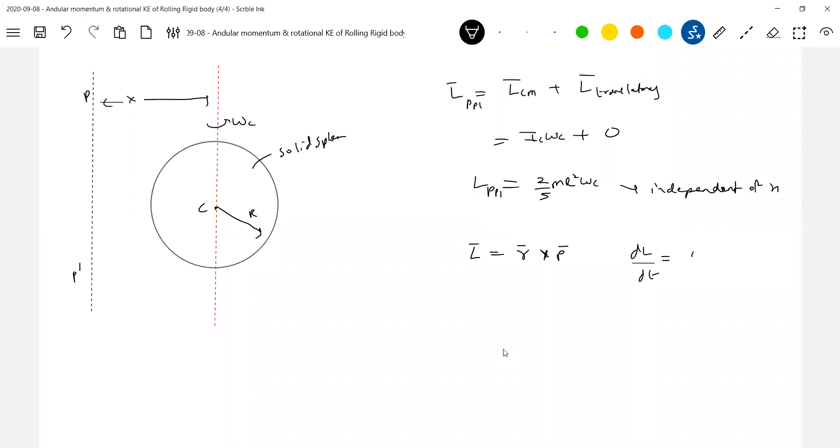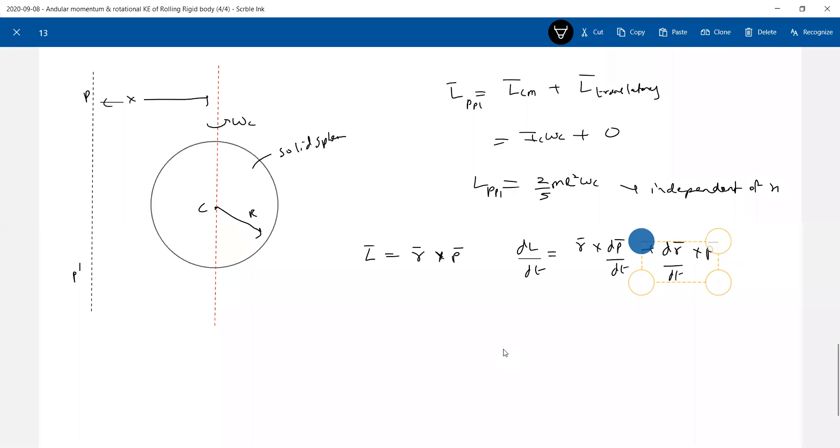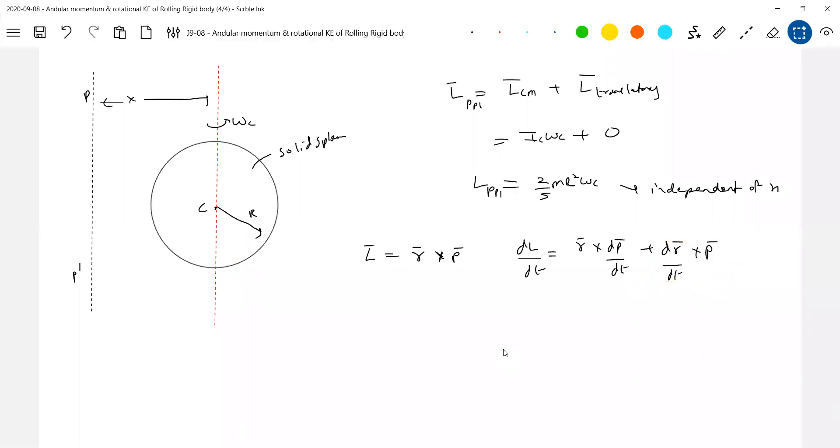dL by dt which is equal to R bar cross dP bar by dt plus dR bar by dt cross P bar. I think I'll write in order. Look at this. So dL bar by dt. What is dL bar by dt? Rate of change of angular momentum. What is dP bar by dt? There should be the force. What is dR bar by dt? There should be the velocity. And what is momentum? M V bar.